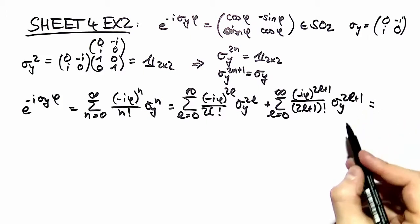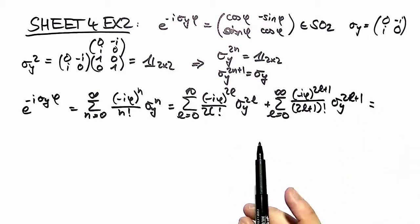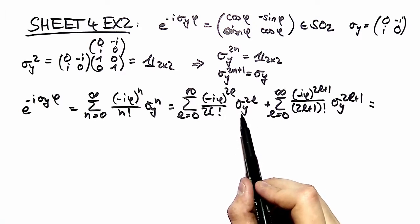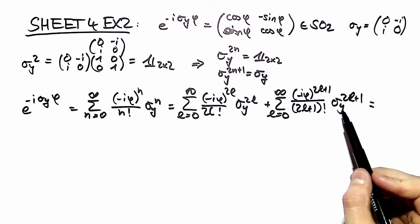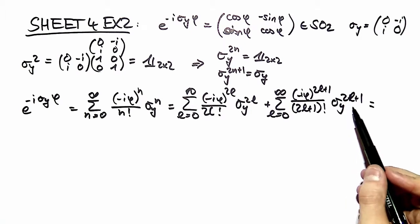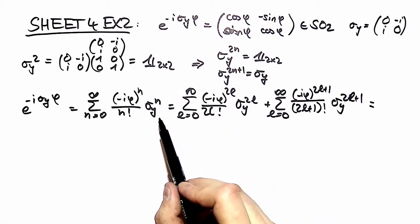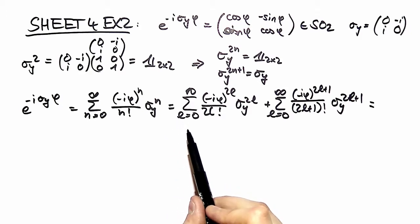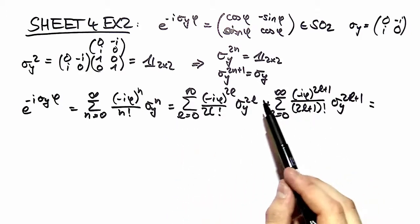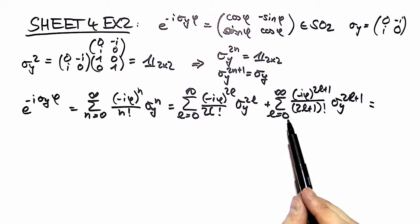So now we are ready to recognize what we already know. This is nothing else than the identity matrix and this is nothing else than sigma y again. But what we see here is the definition of our cosine function, cosine of phi, and here we see minus i times sine phi.